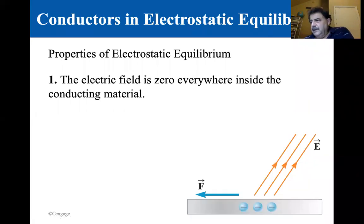Alright, we're at section 15.5 Conductors in Electrostatic Equilibrium. There are four properties we're going to look at. The first one is the electric field is zero everywhere inside the conducting material.